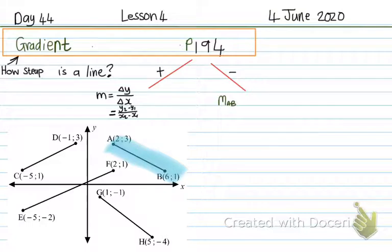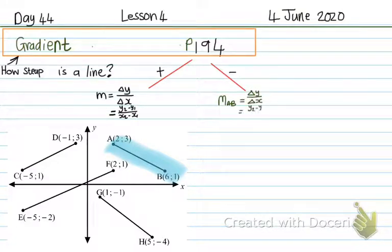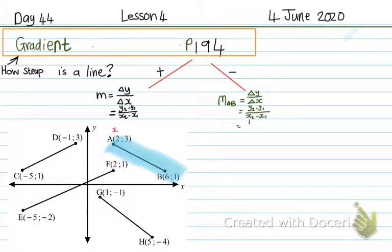MAB — the gradient of AB. Remember, it's not a capital letter M; the capital letter M stands for the midpoint. This is the gradient, so small letter m. The gradient of AB is delta y over delta x, which is y2 minus y1 over x2 minus x1. Now I'm going to mark my coordinates: I'm going to say let A be x1 y1 and the coordinates of B be x2 y2.